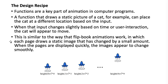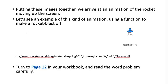We're going to learn more about applying the design recipe today. Functions are a key part of animation in computer programs. A function that draws a static picture of a cat can place the cat at different locations based on the input. When that input changes slightly based on user interaction or time passing, the cat can appear to move. When you put everything together, you can make it look like a rocket is blasting off.